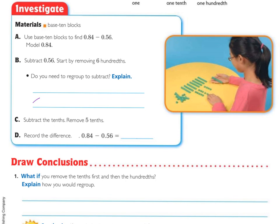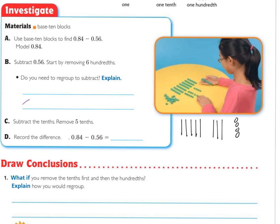Step A says to use base 10 blocks to find 84 hundredths minus 56 hundredths. The first thing you do is draw a quick picture of only your first number — generally the larger amount. So you will draw 84 hundredths. Here is my quick picture: eight tenths, grouped in five and three, and four hundredths, so 84 hundredths. I'm also going to write the traditional algorithm to show how it connects to the picture. So my model is 84 hundredths.